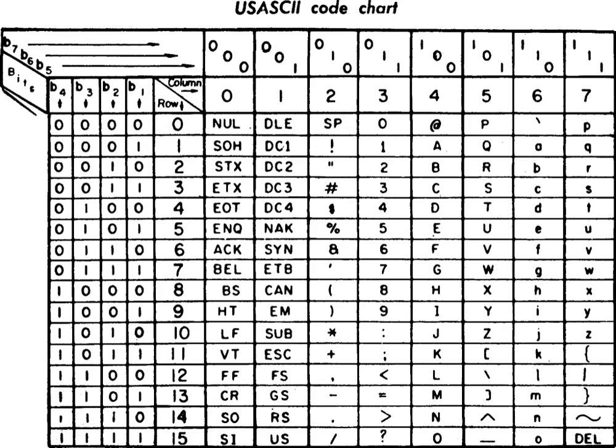ITA 2 was in turn based on the 5-bit telegraph code Émile Baudot invented in 1870 and patented in 1874. The committee debated the possibility of a shift function like in ITA 2, which would allow more than 64 codes to be represented by a 6-bit code. In a shifted code, some character codes determine choices between options for the following character codes. It allows compact encoding, but is less reliable for data transmission, as an error in transmitting the shift code typically makes a long part of the transmission unreadable.